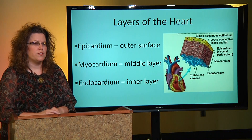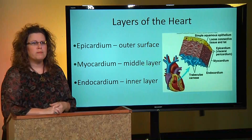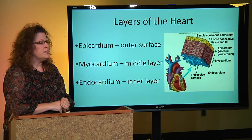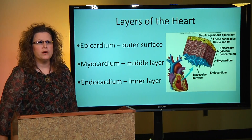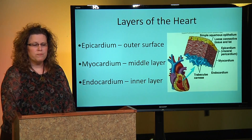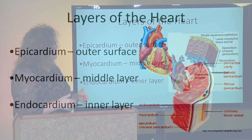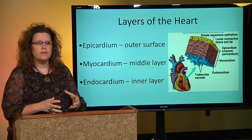First we're going to talk about the layers of the heart. The epicardium is the outer surface of the heart. As you see in our picture, there's a section of the heart that's been pulled out and enlarged to give you a better understanding. The myocardium is the middle layer, specifically the muscle layer — the beginning of the word 'myo' always refers to muscle. The most inner layer of the heart is the endocardium, and that's the very inside of the heart that the blood comes in contact with.